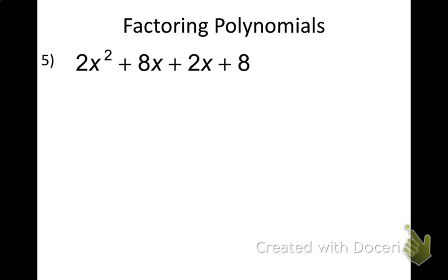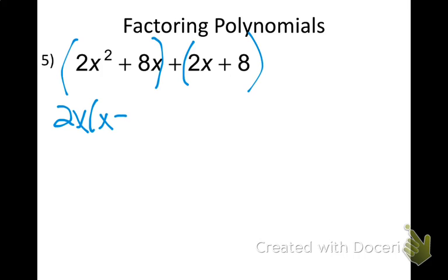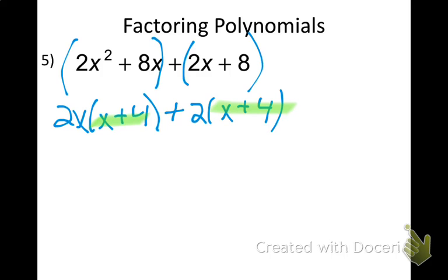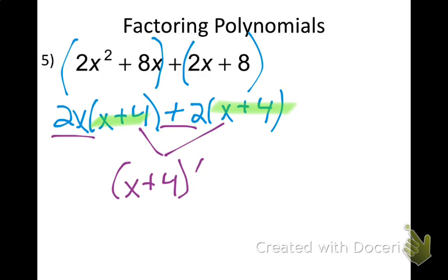Number 5 — notice this is a quadratic because it has an x squared term, which means I'm only going to have two factors, not three. On the left side, pull a 2x out giving 2x times (x plus 4). On the right side, pull a 2 out giving x plus 4. Self-check: parentheses are the same. Because this is a quadratic, I only have two factors. This comes down giving x plus 4. My leftovers form the other factor: 2x plus 2. That is the answer.